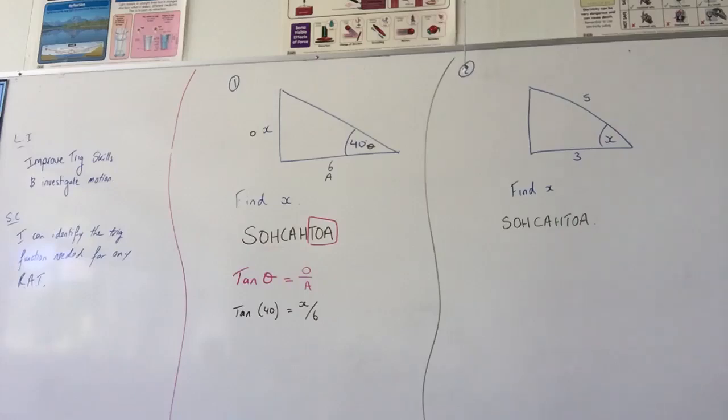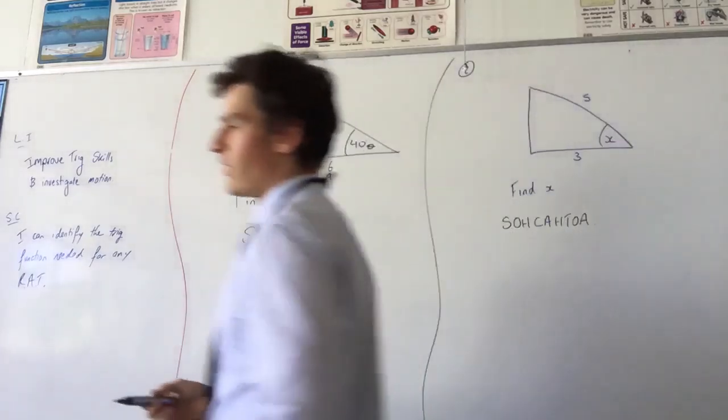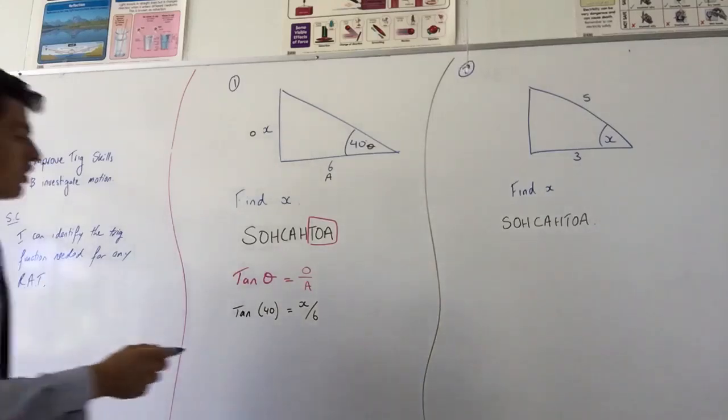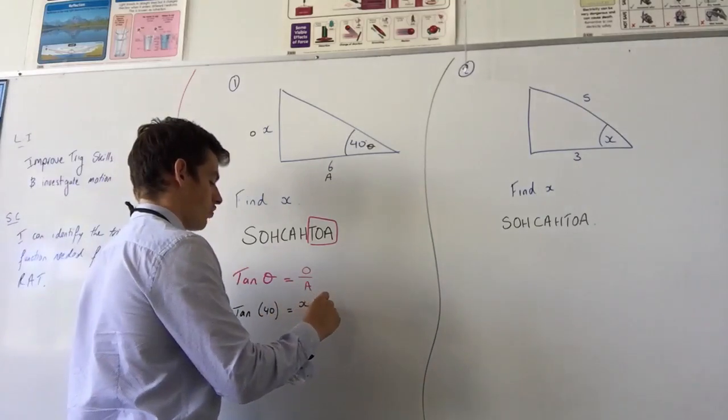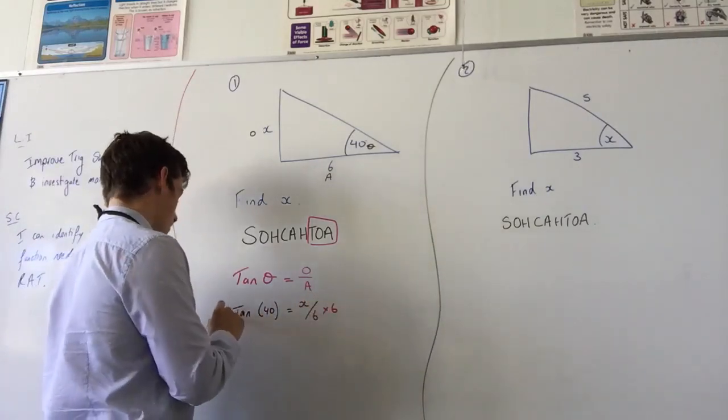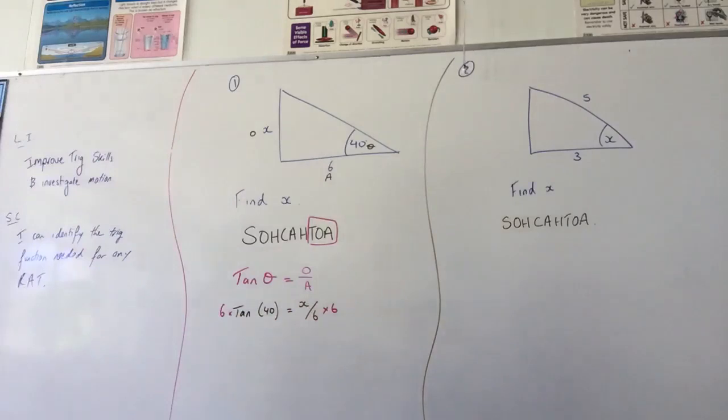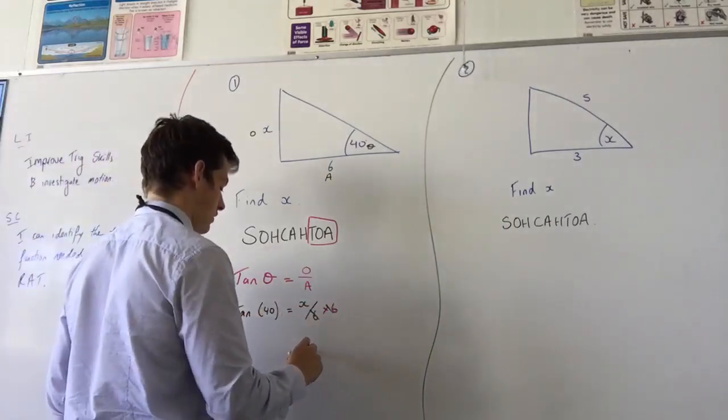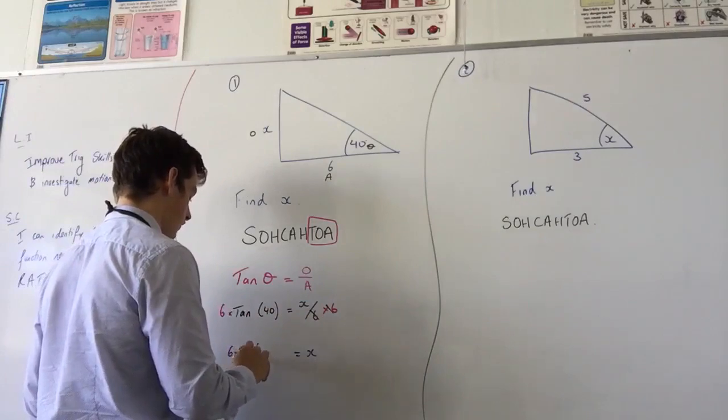So we can't shove that in the calculator just yet, can we? What's stopping us from doing that? How do I do that? Times by 6, I want to rearrange. I've only got one thing stopping the x from being by itself, and that's 6 times. Now, tan 40 is a number. I don't know what the number will be, but it is a number. So right now we cancel our 6s, and we should have x equals 6 times tan 40.